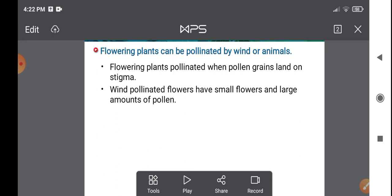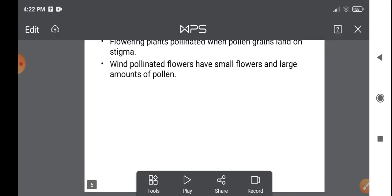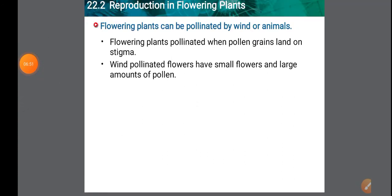When pollen grains are transferred between flowers of different plants of the same species or very closely related species, it is called allogamy or cross-pollination.